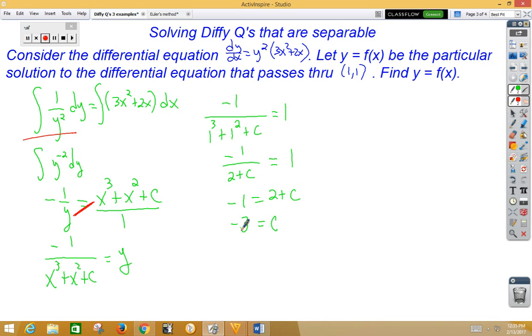So in this differential equation, we get y = -1/(x³ + x² - 3).